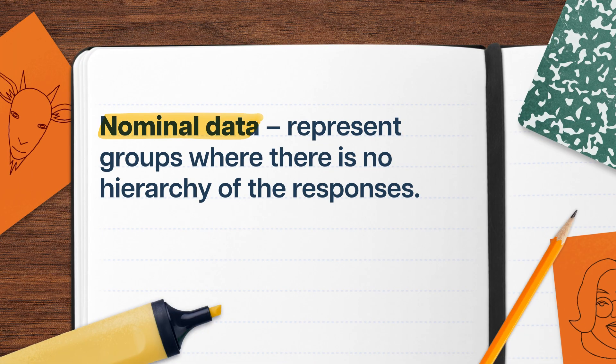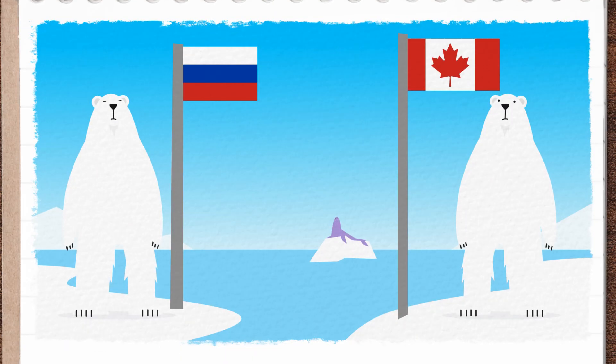Qualitative data can also be further classified into other types. Nominal data represent groups where there's no hierarchy of the responses. A survey looking at where polar bears live, for example, might show that our majestic snow monarchs are terrorizing seals across the Arctic, from Russia and Svalbard to Canada and Greenland. But there isn't a sense that being a polar bear from Russia is better than being from Canada — however, as a Canadian, we all know my preference.